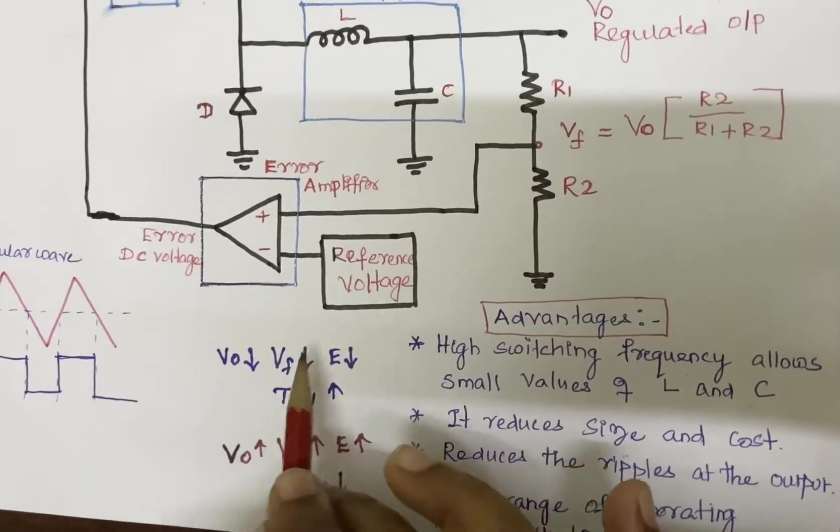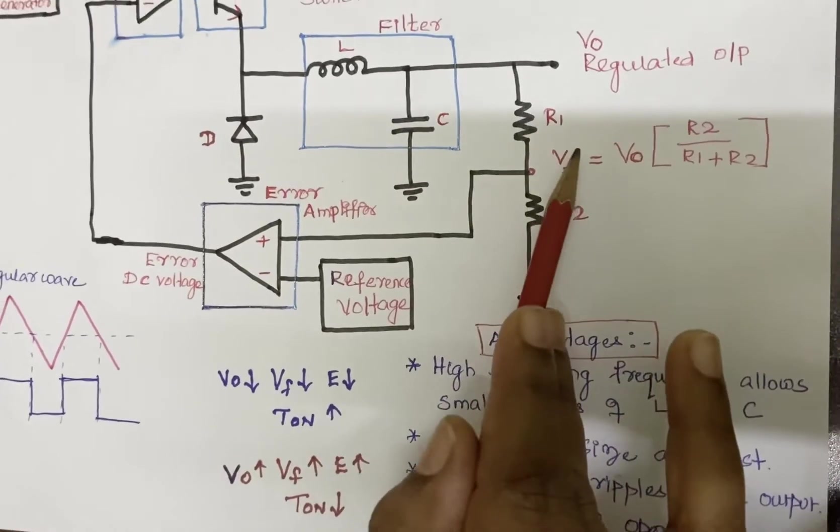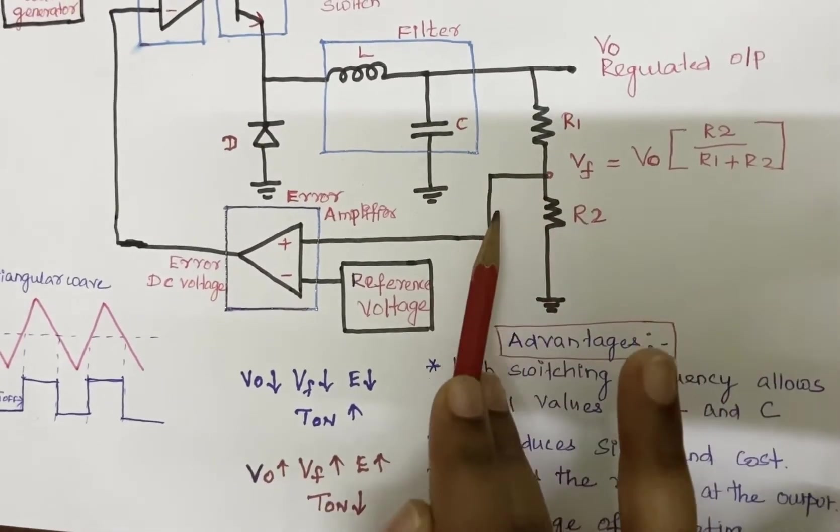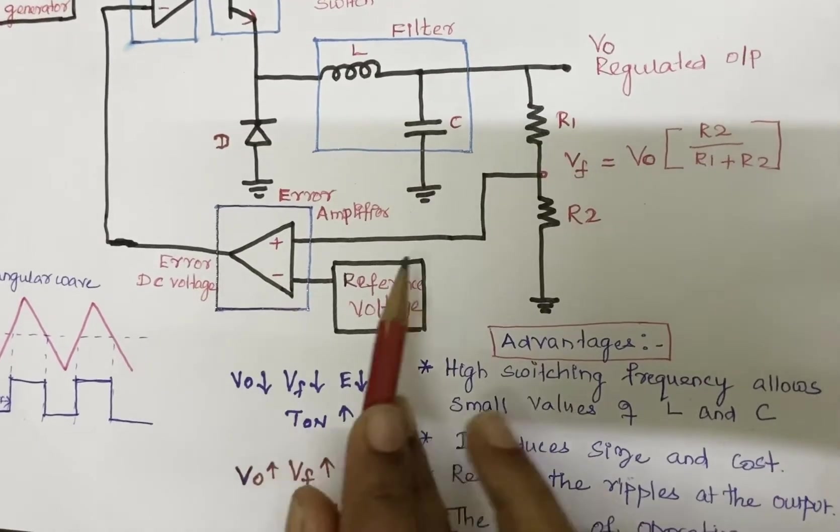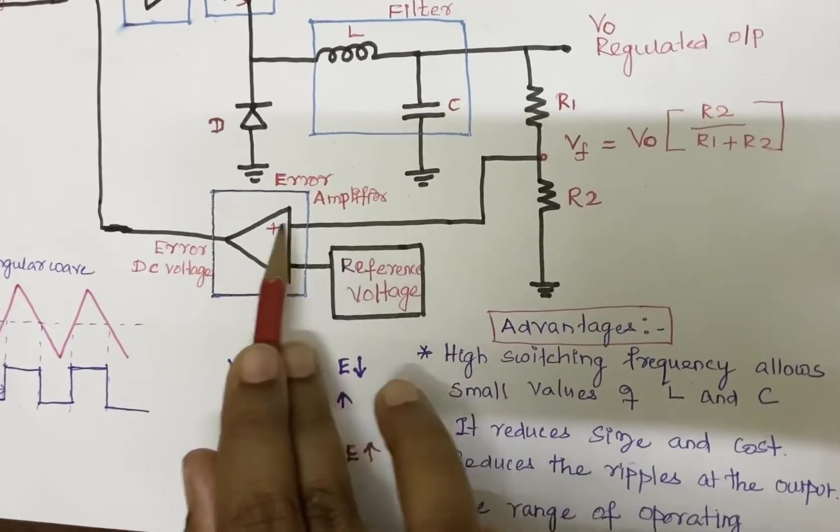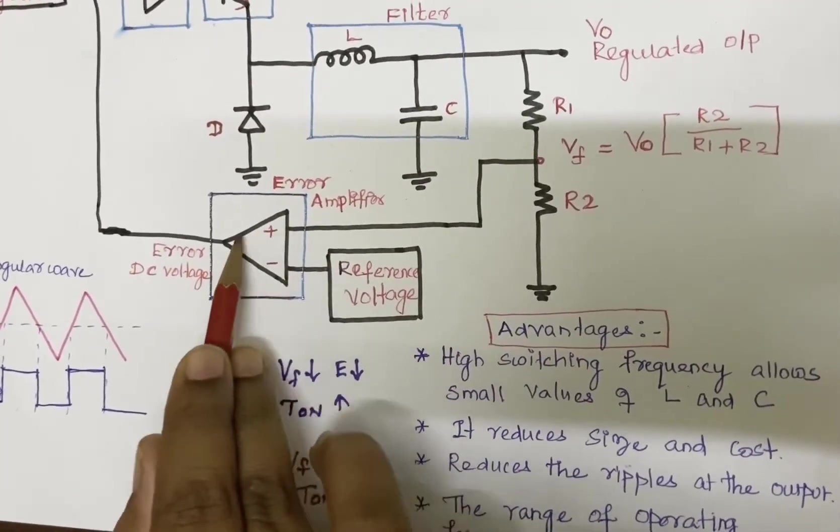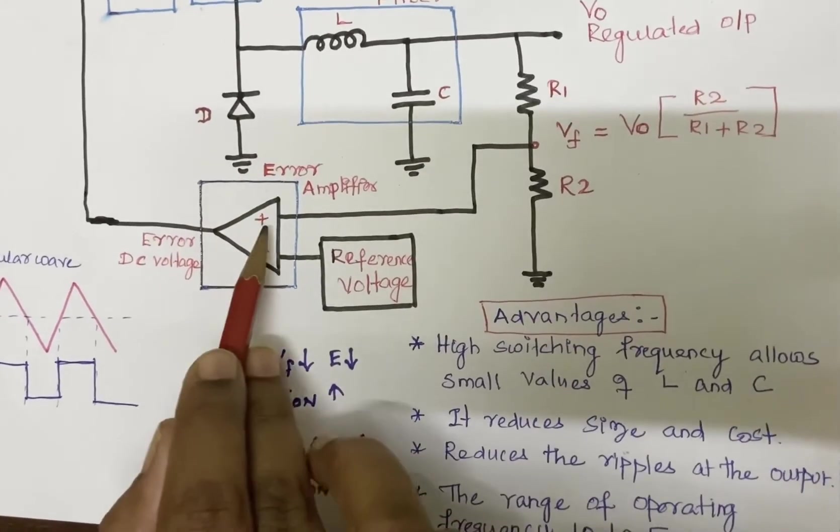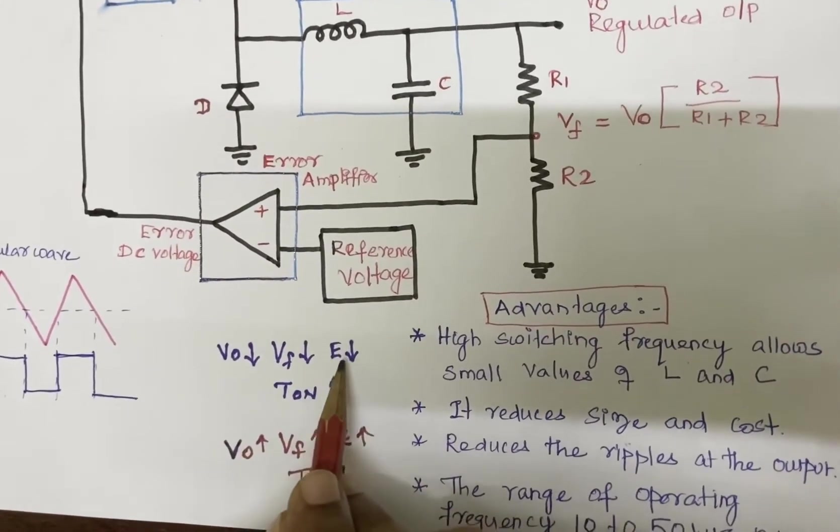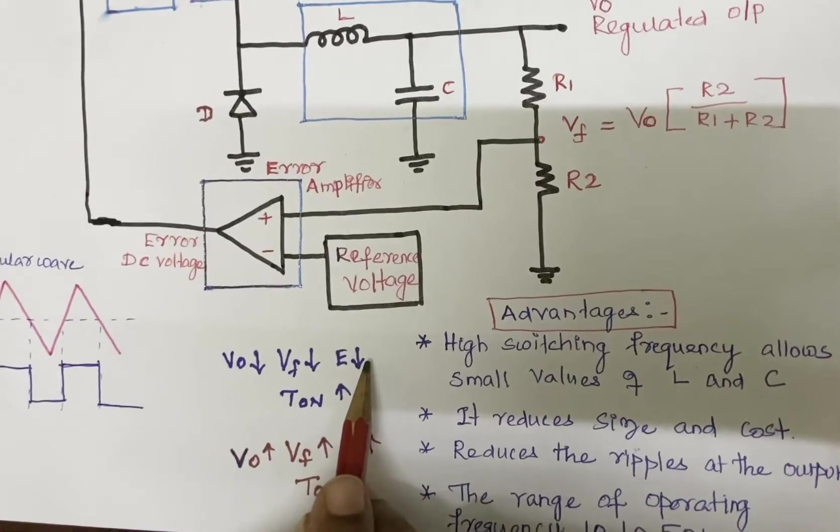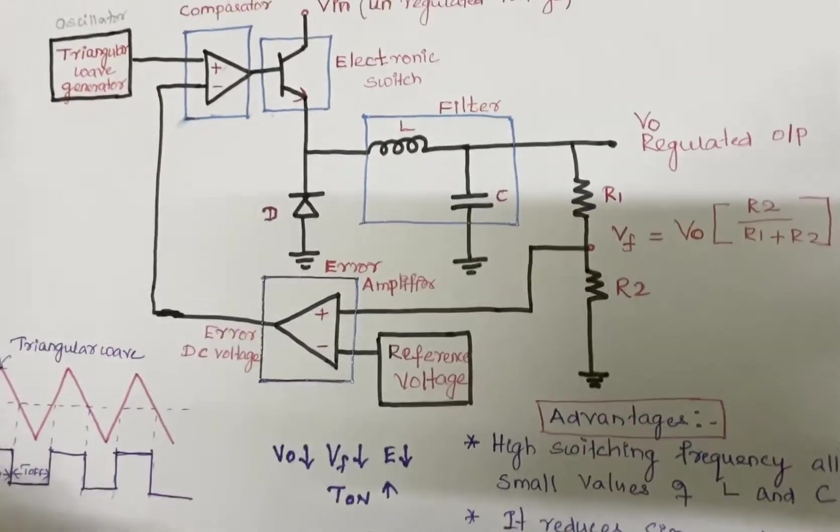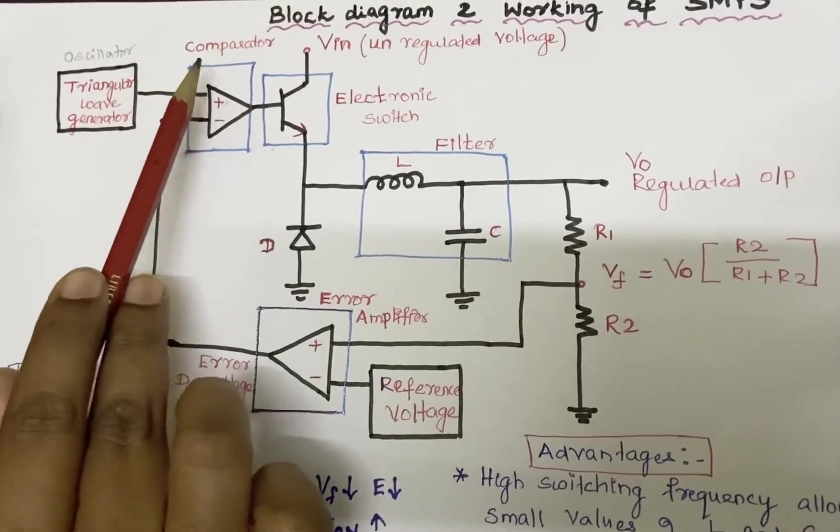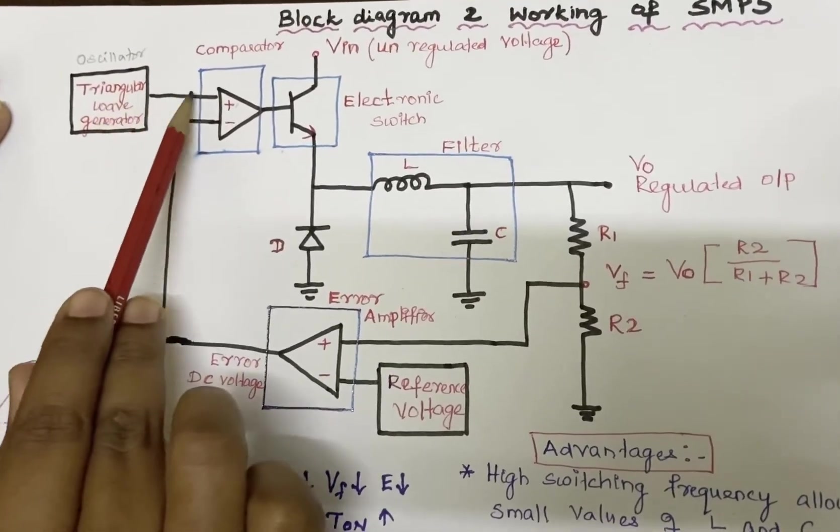If Vo decreases, that means Vf is fed back to the error amplifier. So Vo decreases, Vf also decreases, which is connected to the positive terminal of the error amplifier. From that, the error voltage DC voltage also gets decreased. This decreased voltage is given to the comparator.